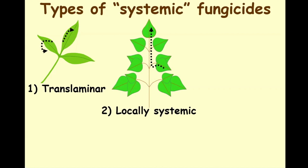Products that are locally systemic will move to a limited degree in the plant — they move through the xylem. Xylem is what moves water through the plant, taking water from the soil up the plant in one direction only. Xylem does not move water down; it only moves water up. So products with local systemic activity are only going to move in the direction water moves in the plant. This is extremely important: if you're applying a product that you think is going to help control a disease in the soil on your roots and you apply it to the canopy, and it's locally systemic, it will not move down to the roots. It'll only move up away from the site towards the tips of the leaves.